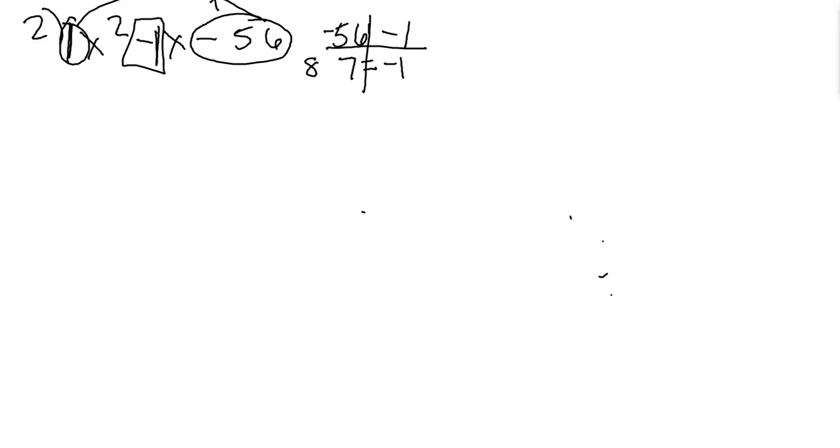56 times 1. We're gonna use the 8 and the 7 because these two multiply together equals 56. So how would I get the 8 and the 7 to equal negative 1? Subtract the 8 and the 7. Right, but if I do 8 minus 7, what do I get? Positive 1. Right? So I need to do negative 8 plus 7. Yeah.